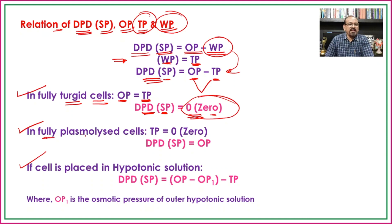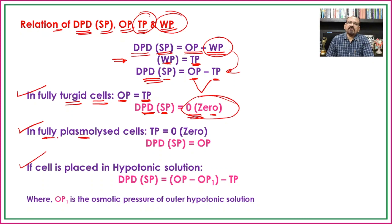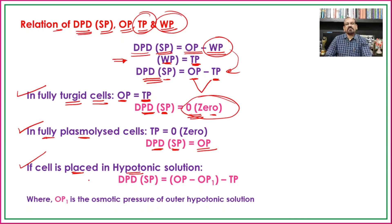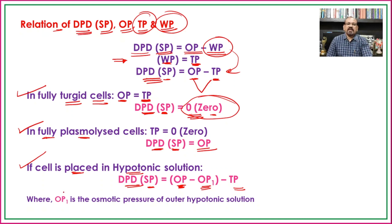In the fully plasmolyzed cell, turgor pressure is zero. In such cases, the ability of the cell to absorb water equals the osmotic pressure — so DPD equals osmotic pressure for plasmolyzed cells. But if the cell is placed in a hypotonic solution, where the outer solution is less concentrated, then DPD or SP equals the osmotic pressure of the cell minus the osmotic pressure of the outer solution minus turgor pressure. In this way, we can calculate the DPD or suction pressure of any cell.